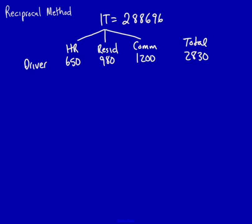I'm going to calculate the allocated. That's 650 divided by 2830 multiplied by the $288,698. That equals 66,308.